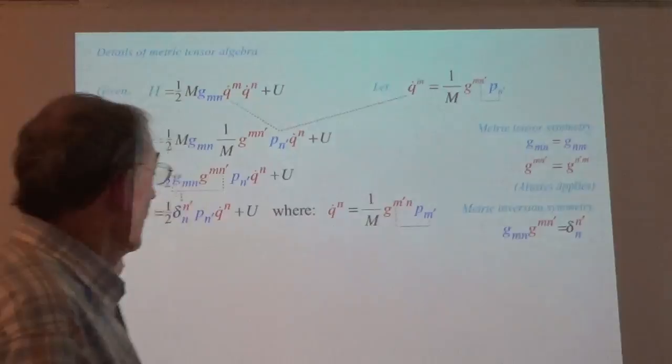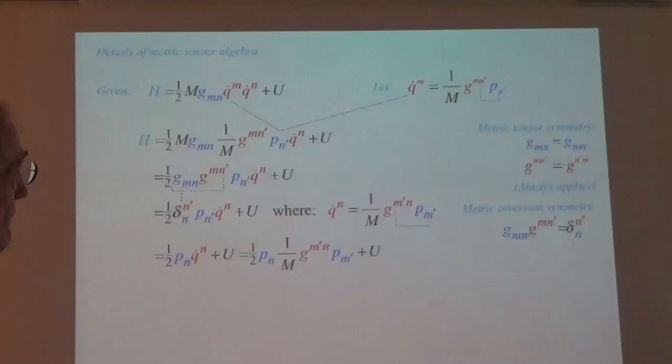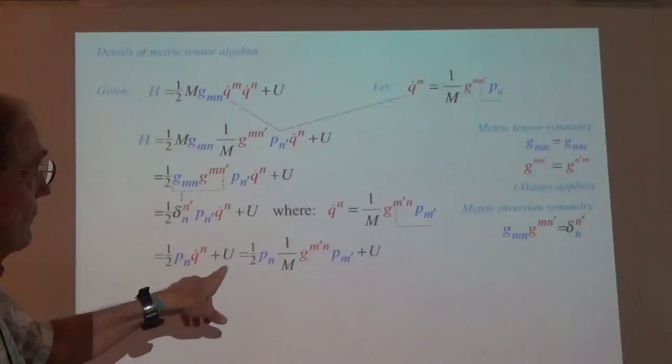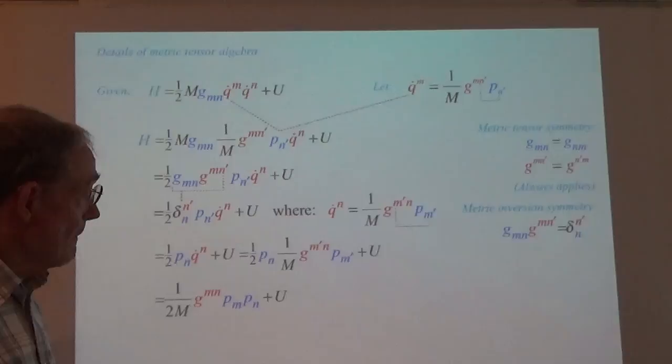So we end up with something that looks a bit messy, but this one right here turns into what we asked for — there is the Hamiltonian being written out in the formally and numerically correct form.